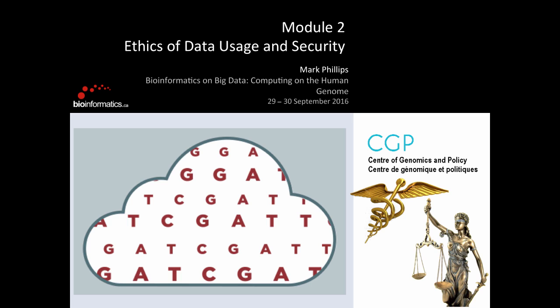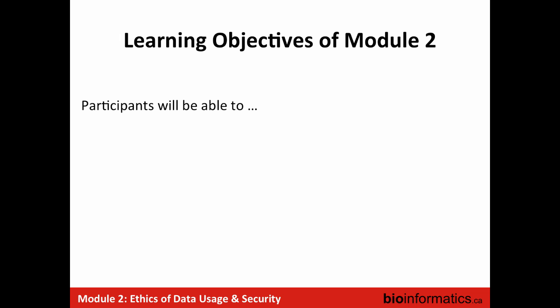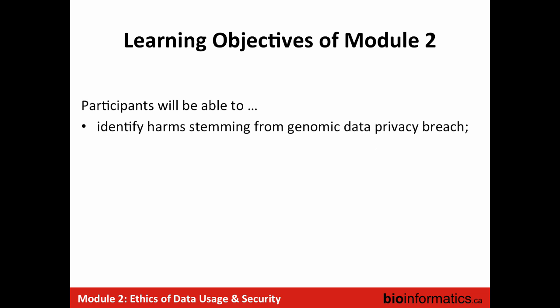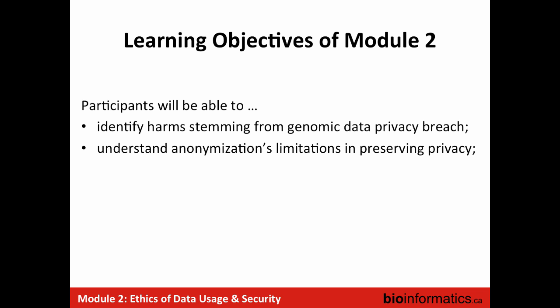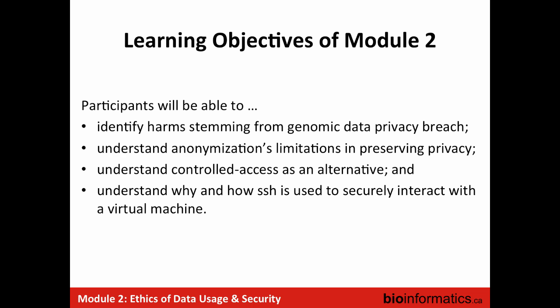This module is going to be on ethics of data usage and security. It's broken up into three sections with four learning objectives: identifying harm stemming from genomic data privacy breaches, understanding anonymization and its limitations in preserving privacy, understanding how controlled access works as an alternative or complement, and understanding why and how SSH is used to securely interact with the virtual machine.